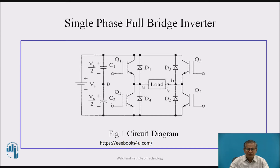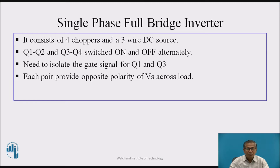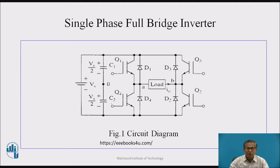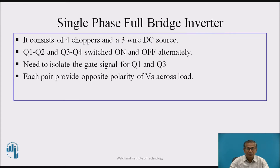This is the circuit diagram of the single-phase full-bridge inverter. It consists of four power devices and four feedback diodes. It consists of four choppers and a three-wire DC source. Q1 and Q2 act as one pair and Q3 and Q4 act as another pair. Q1, Q2 and Q3, Q4 are switched on and off alternately. Gate signals for all power devices need to be isolated. Each pair provides opposite polarity of Vs across the load.